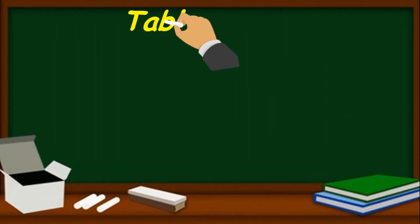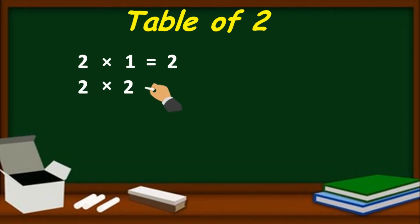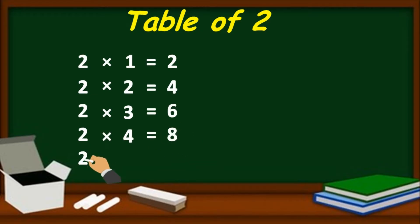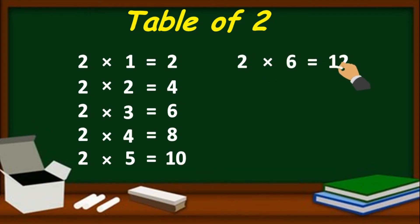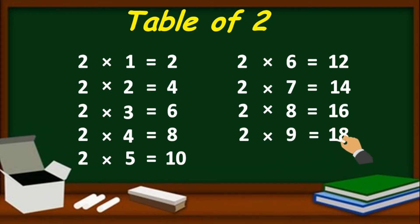Table of 2. 2 one's are 2, 2 two's are 4, 2 three's are 6, 2 four's are 8, 2 five's are 10, 2 six's are 12, 2 seven's are 14, 2 eight's are 16, 2 nine's are 18, 2 ten's are 20.